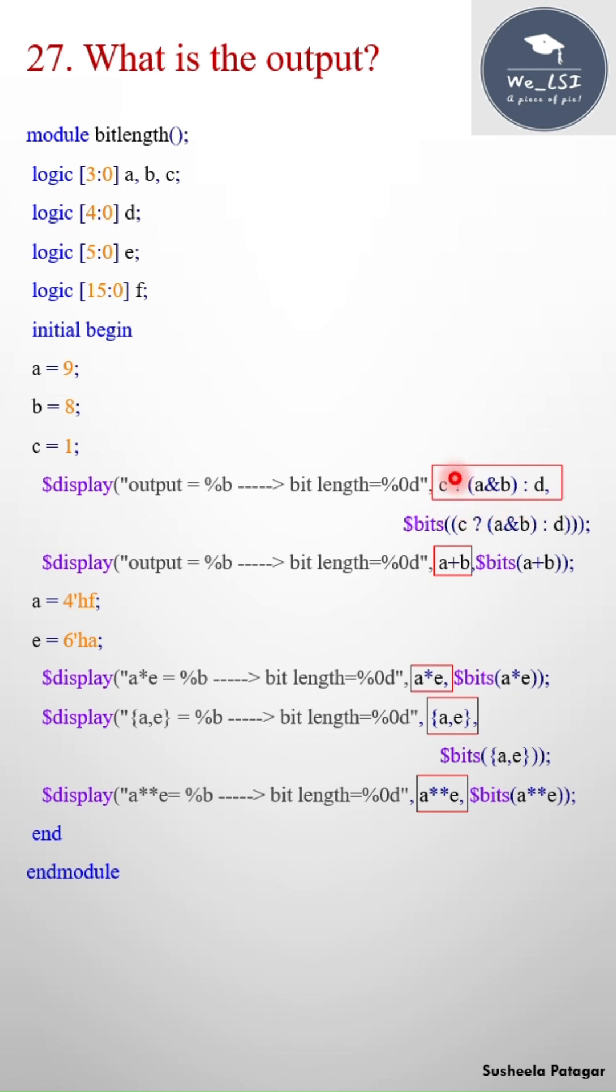If you see here I have a conditional expression: if c is true, a and b will be executed, otherwise d will be executed. C value is 1, that means a and b has to execute. Both a and b are 4 bits. My output should be 4 bit, right? But if I print this example I will get the bit length of 5 here. So why I am getting 5?